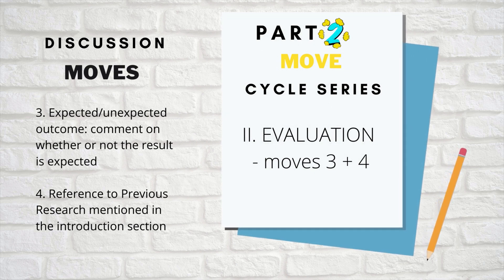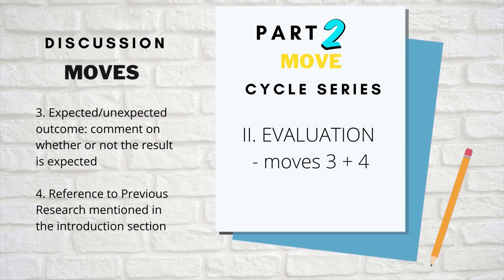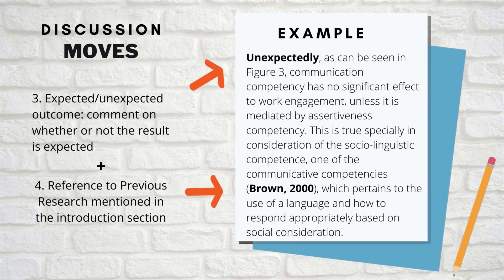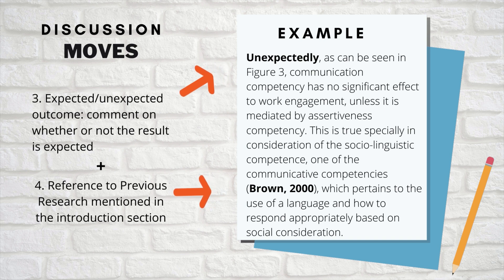The third combination is move three plus four: expected or unexpected outcome — a comment on whether or not the result is expected — plus move four. For example: 'Unexpectedly, as can be seen in figure three, communication competency has no significant effect on work engagement unless it is mediated by assertiveness competency. This is true especially if consideration of the sociolinguistic competence, one of the communicative competencies pertaining to the use of language and how to respond appropriately based on social consideration.'